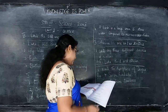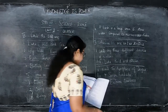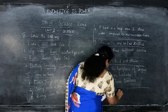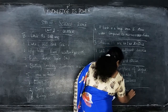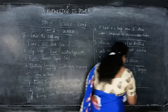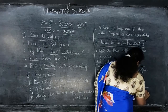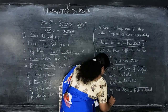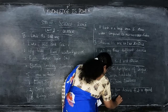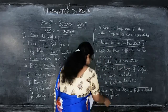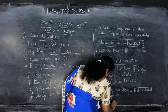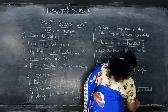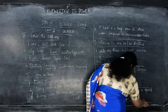Third question: write any two diseases that are spread by mosquitoes. The answer is malaria and dengue fever.